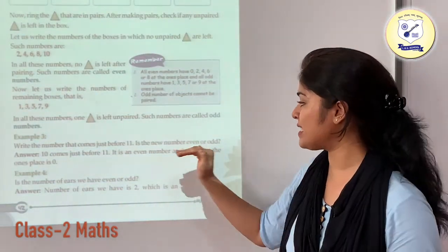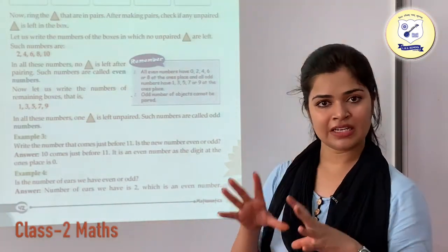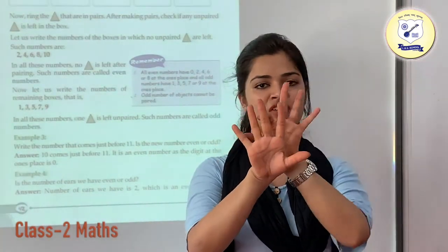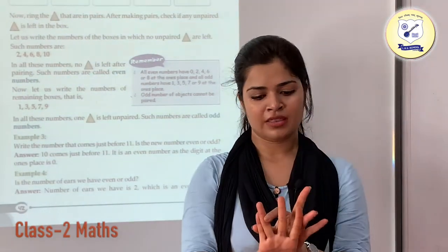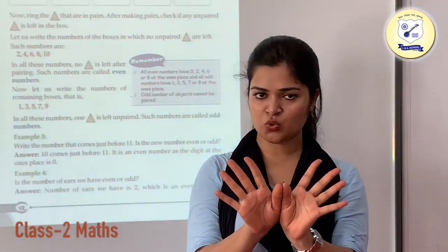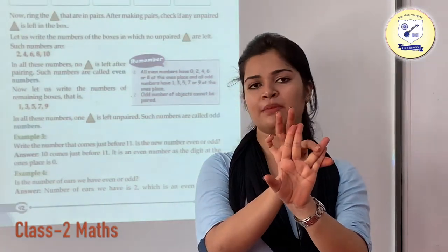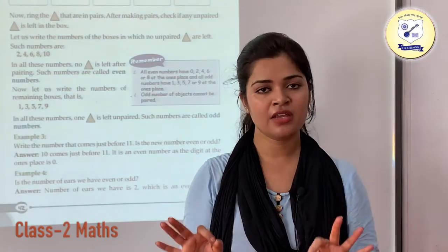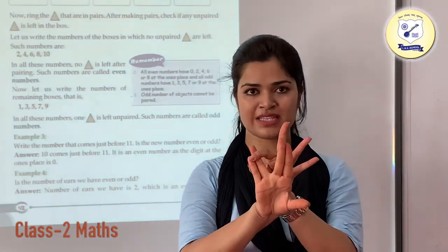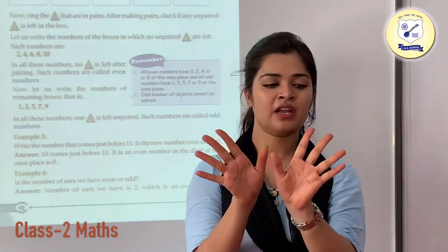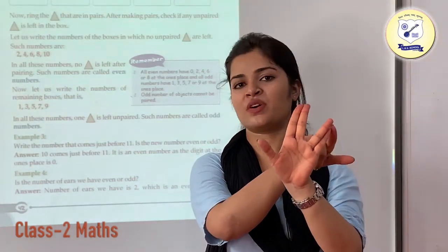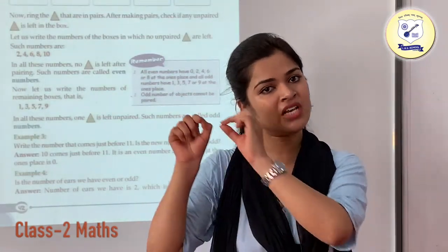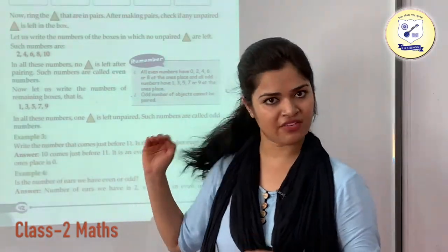Is this number even or odd? I am having 10 fingers. I have made a pair of 2, then pair of 2, then the pair of these 2 thumbs, then pair of 2, then pair of 2. I am not left with any fingers — first pair, second pair, third pair, fourth pair, fifth pair. So I am not left with any number, which means this is going to be your even number. So 10 is your even number.